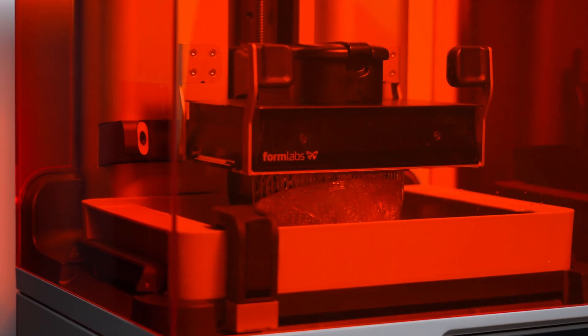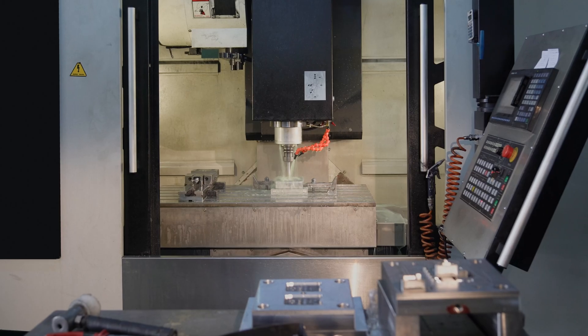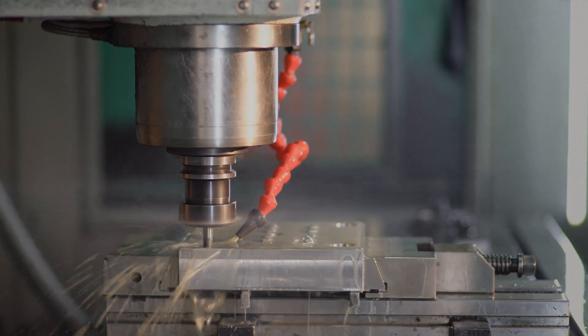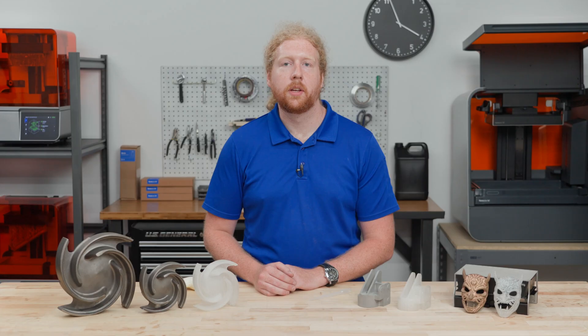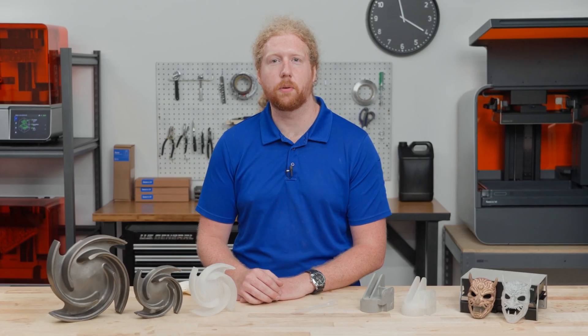Formlabs Clear Cast resin is an accessible solution for making patterns in-house. Eliminating machined metal molds can save foundries tens of thousands of dollars on each part. Even outsourcing existing 3D printed pattern technology can cost hundreds of dollars per pattern, making it untenable for many businesses.